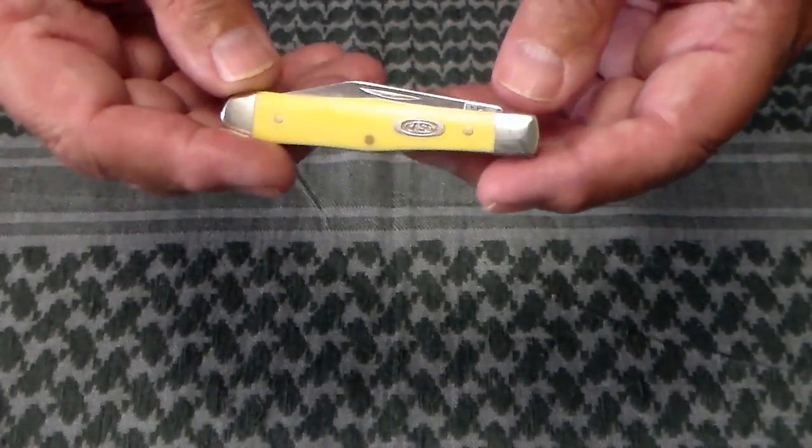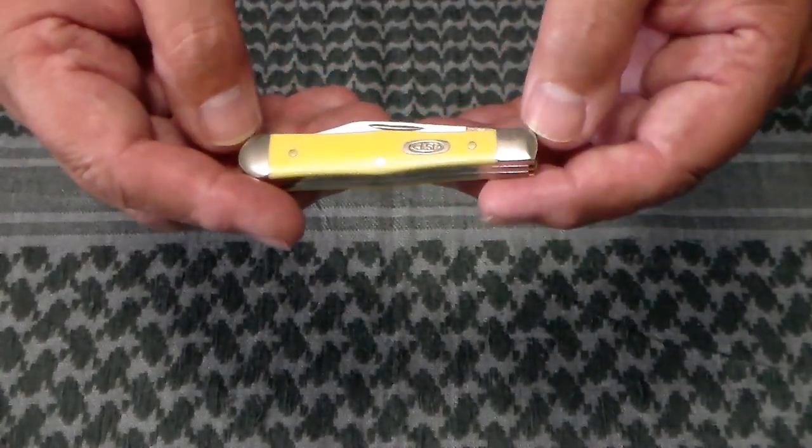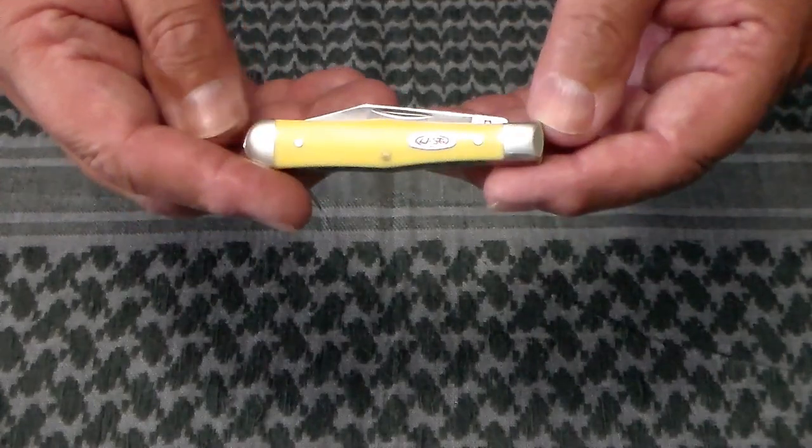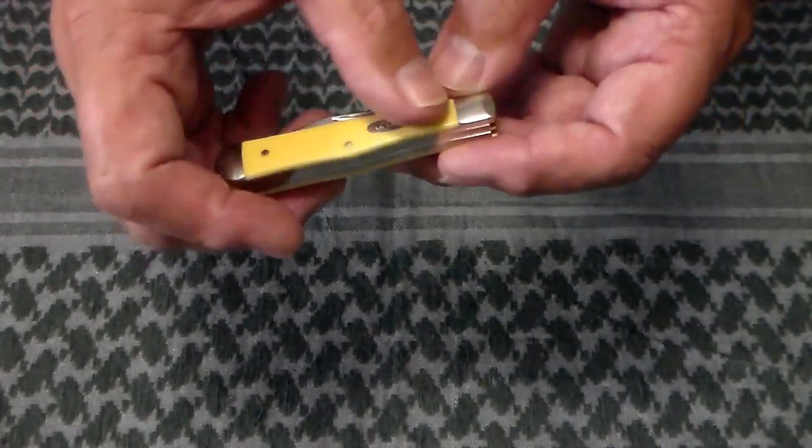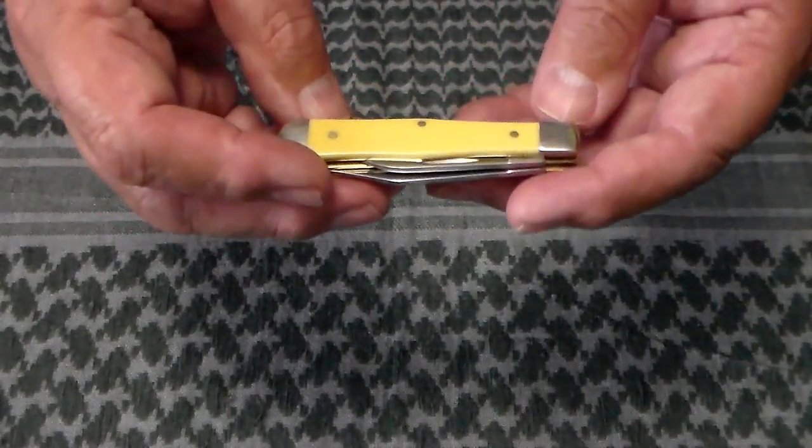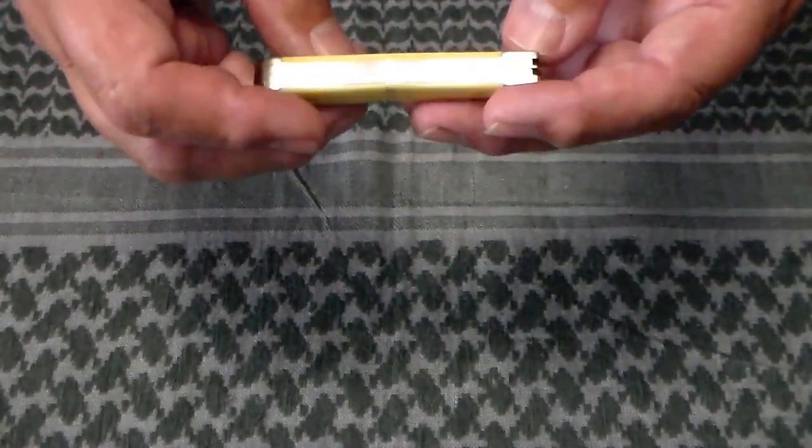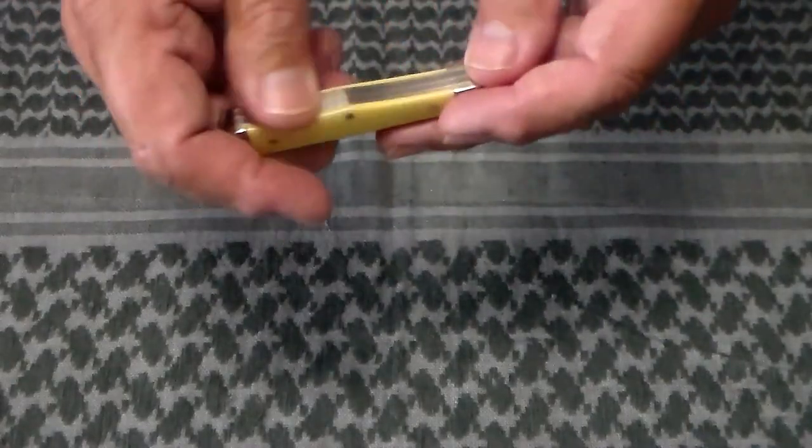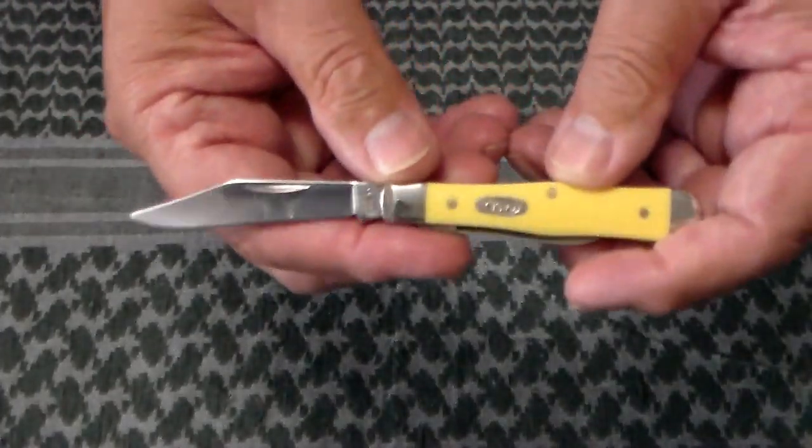It's a two blade knife. It's got stainless steel bolsters, nickel silver shield and pins, two blades, brass liners. Fit and finish on this is pretty nice. It has a master blade. Let me go up here and look at the bolster.